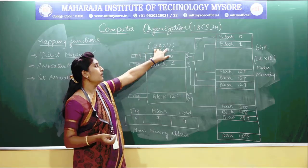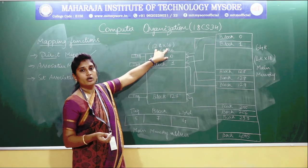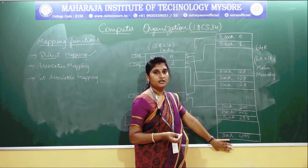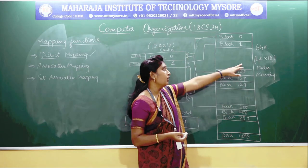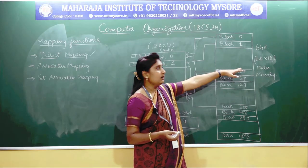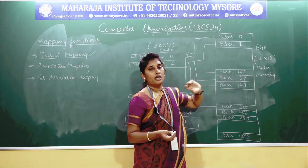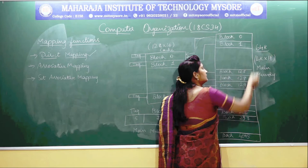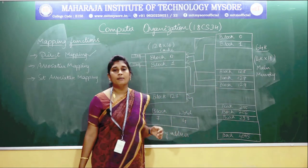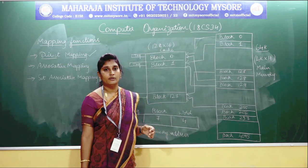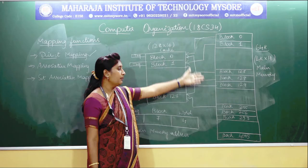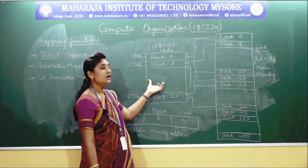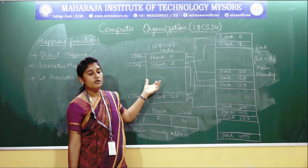Each block is capable of storing 16 words of data. The main memory has a capacity of 4K blocks — that is, each block is capable of storing 16 words of data, giving a 64K size of your main memory. The complete 4095 blocks cannot be fitted into the cache memory.